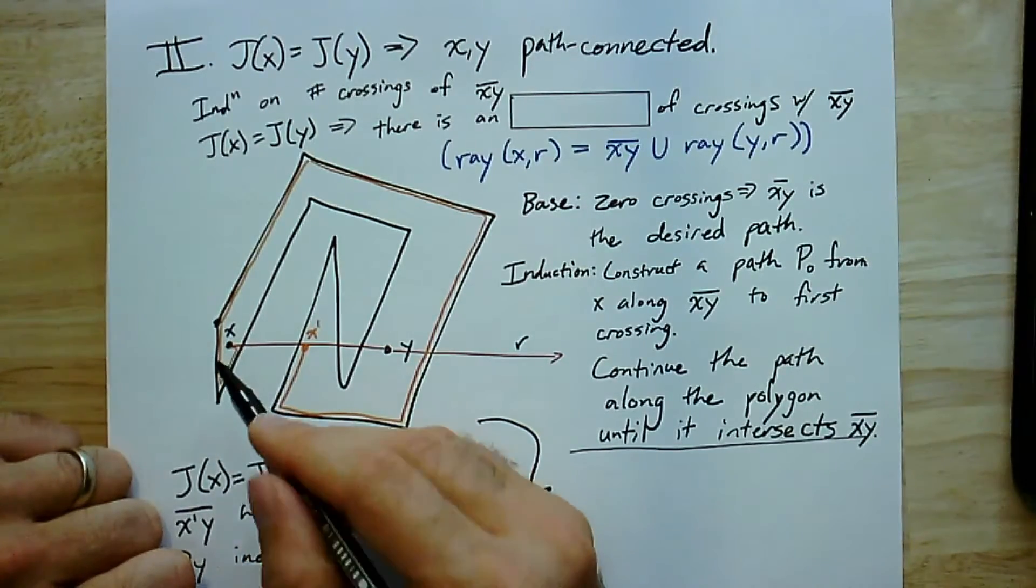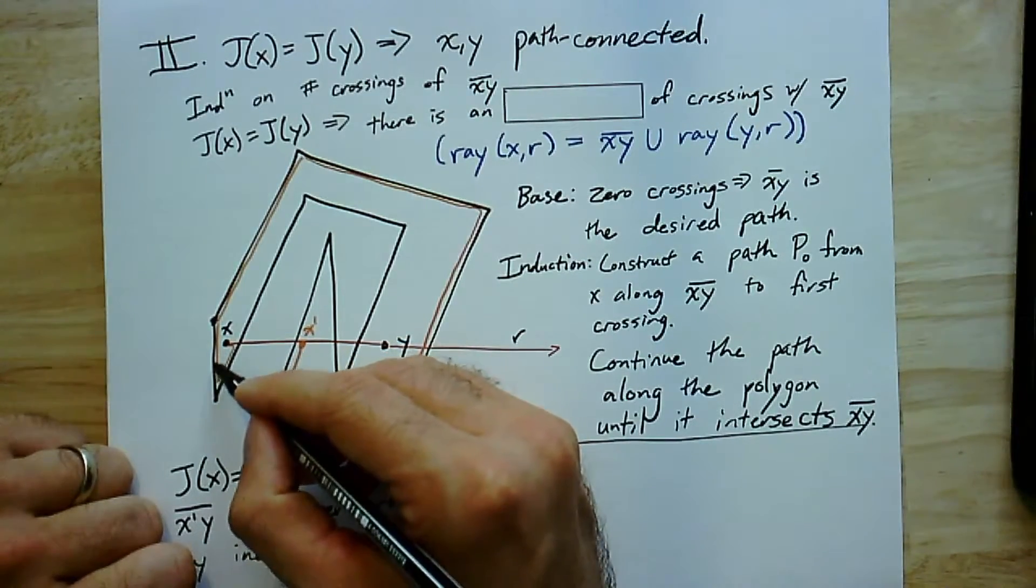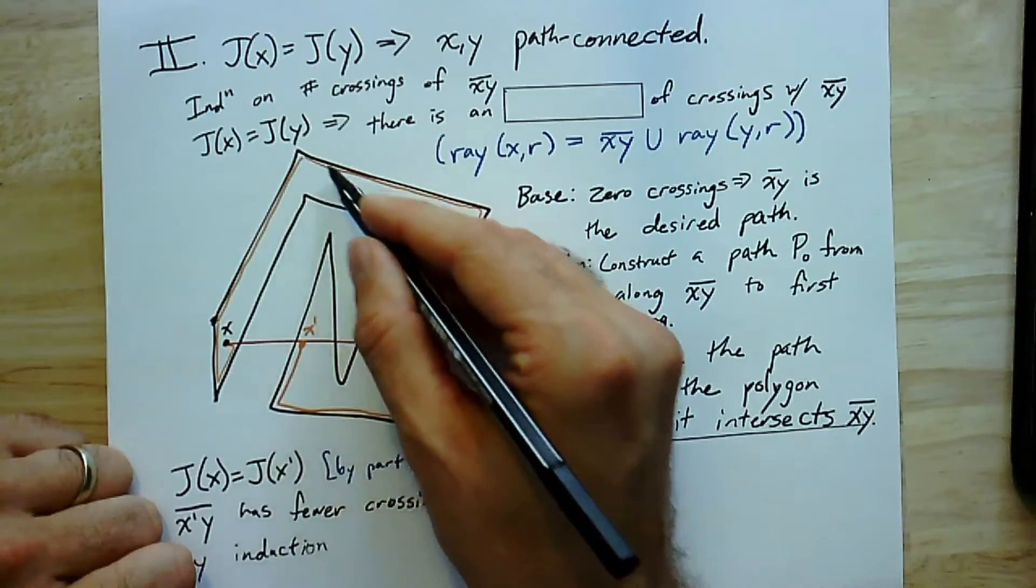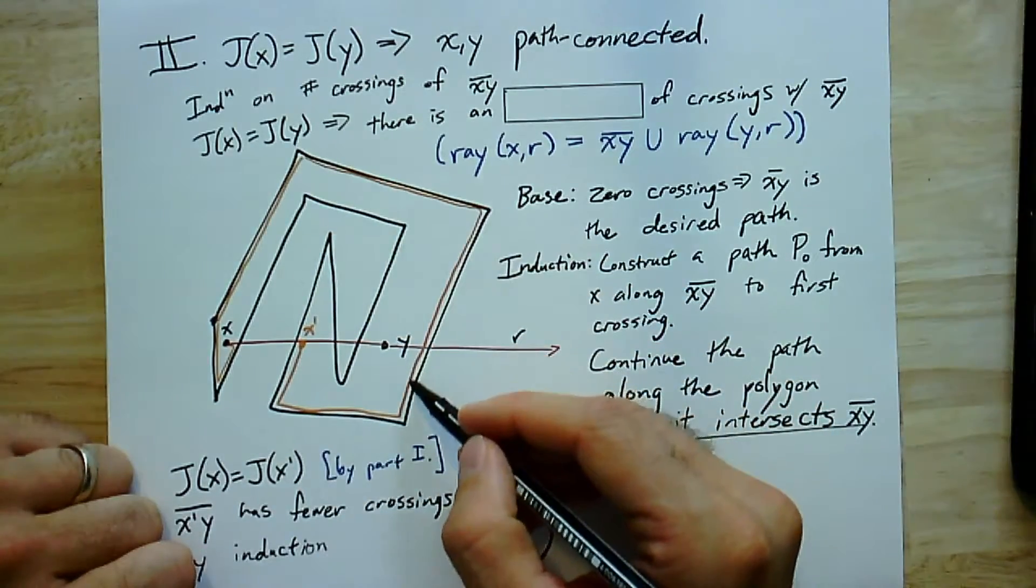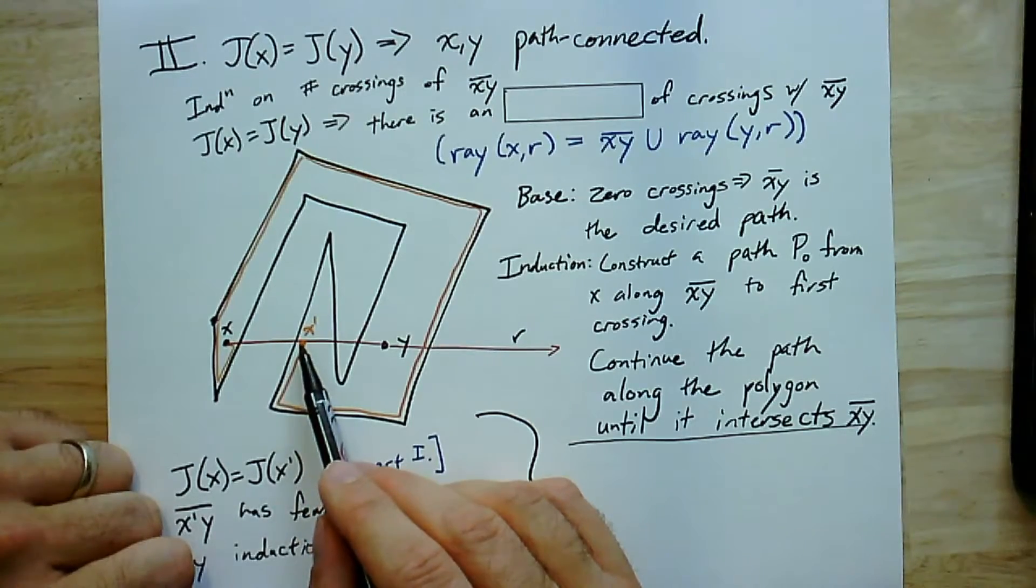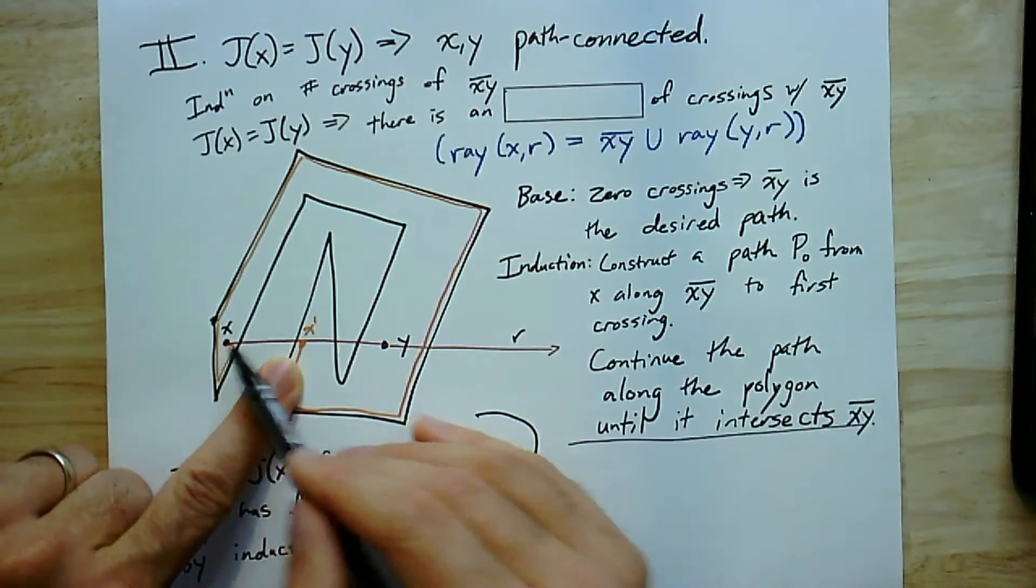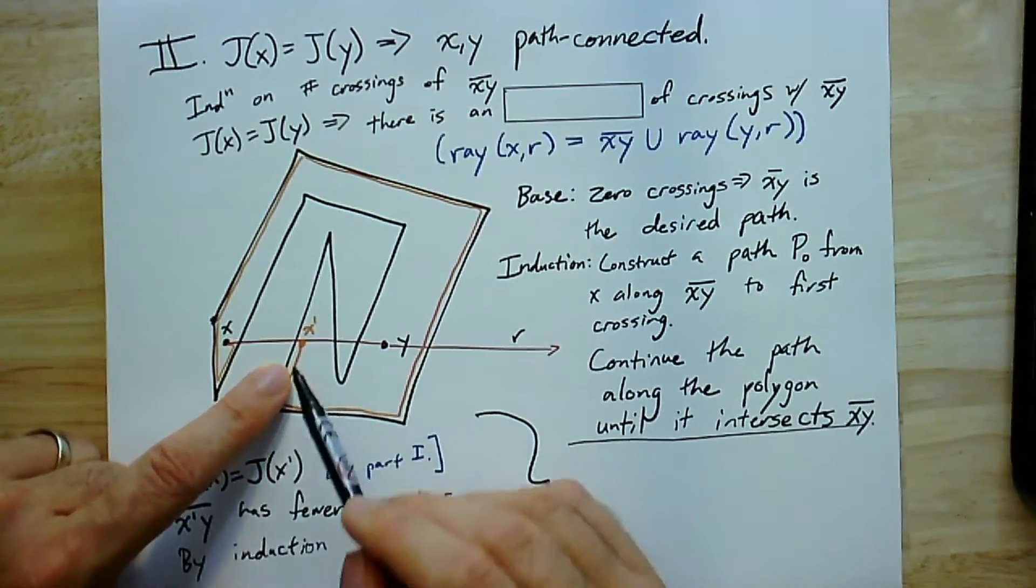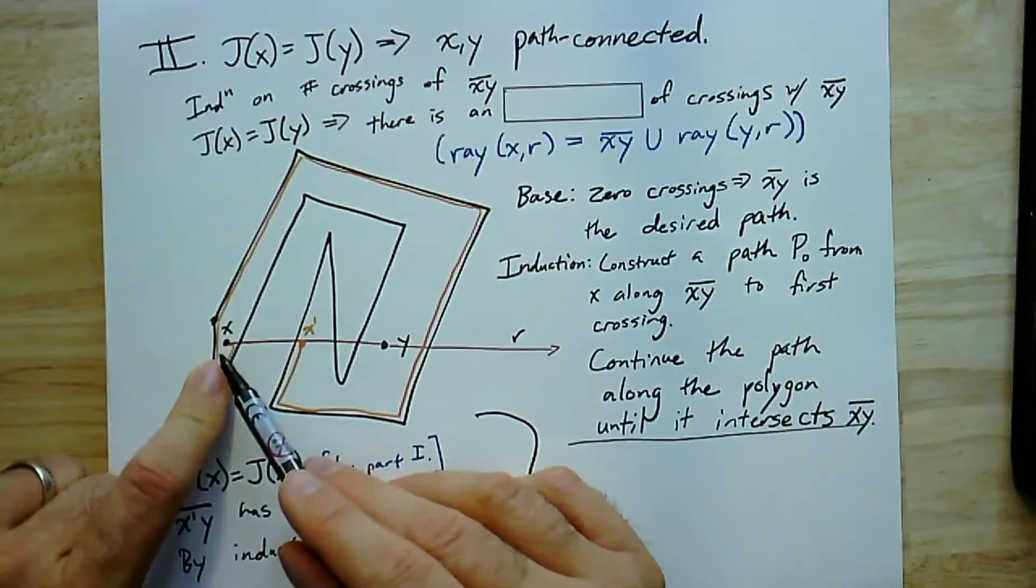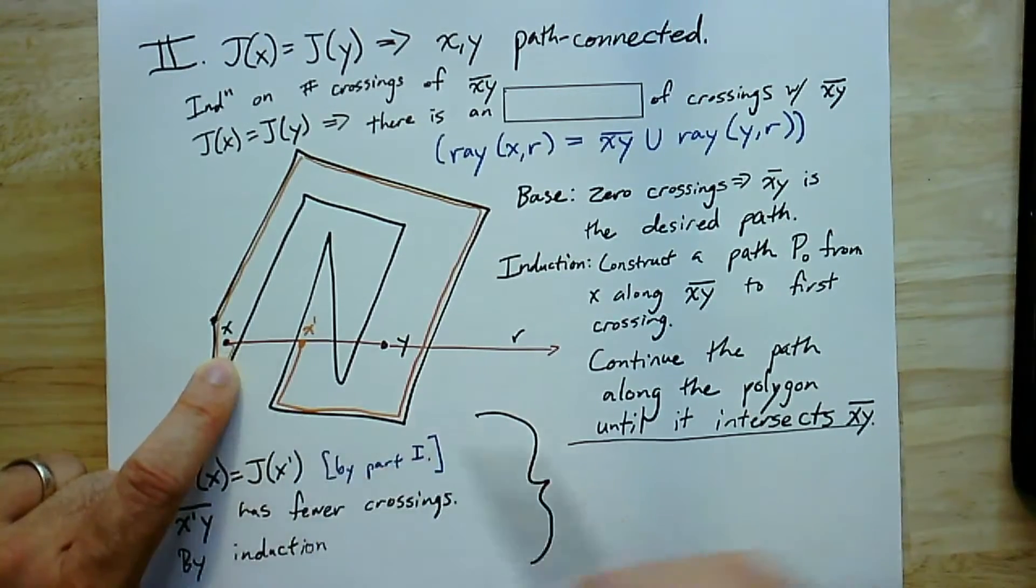But in general, that might not happen. It might be that as I go from x straight to y, I hit the edge. And so what I do is I stop right before I hit the edge. And here, now, remember, we can walk along the polygon, the edge of the polygon. And let's just walk all the way around until we get to the point x'. x' was the first crossing of the line segment x,y with the polygon. First crossing, actually, I guess it's the second crossing. This obviously was the first.